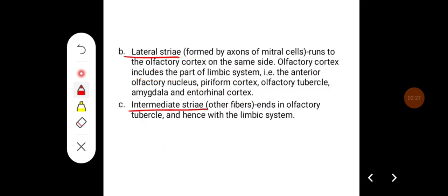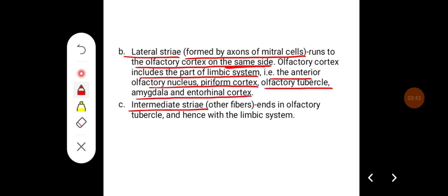Whereas lateral stria are formed by the axons of mitral cells, runs to the olfactory cortex on the same side. Olfactory cortex includes the part of limbic system, that is the anterior olfactory nucleus, pyriform cortex, olfactory tubercle, amygdala and entorhinal cortex.